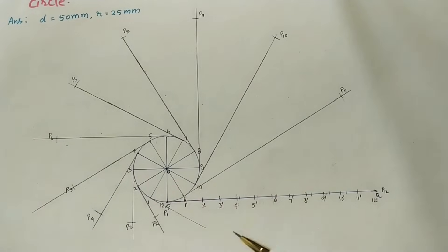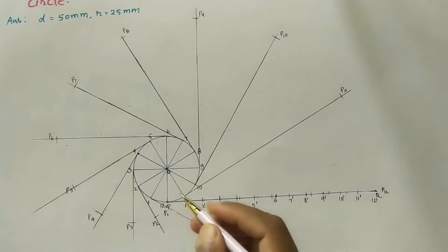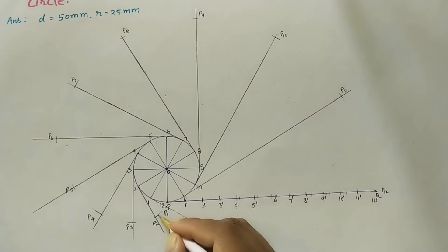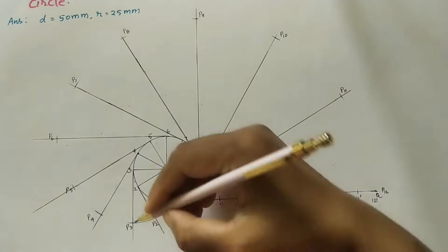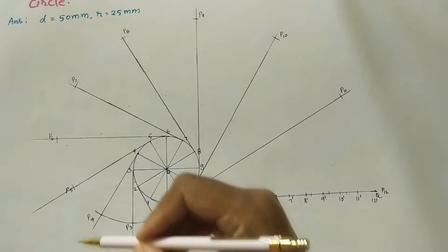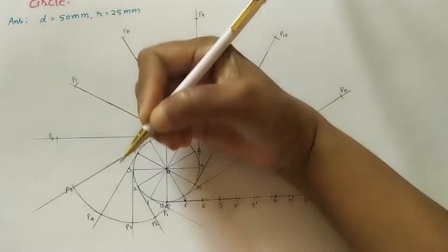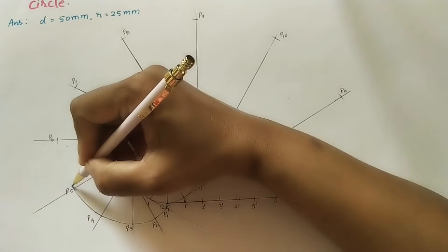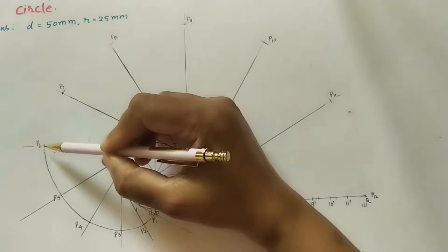Join all these P points with a freehand curve — next we will get the involute. Start from P, join P1, P2, P3, P4, P5, P6 and continue joining all the points with a smooth freehand curve.